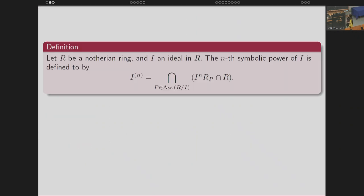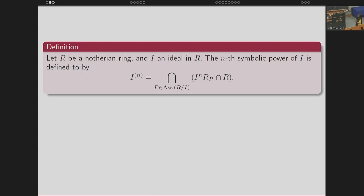In a Noetherian ring, if I is an ideal, then the symbolic power is defined by considering the extension of this ideal in the localization and then contracting it back. We vary this intersection over all the associated primes. This is the more general definition of the symbolic power.